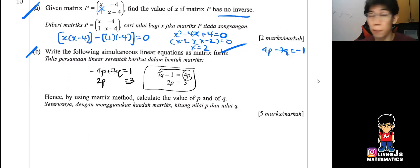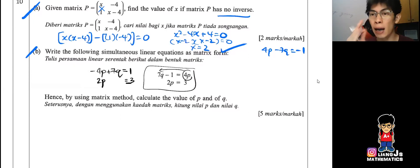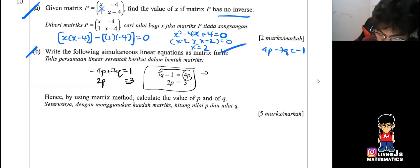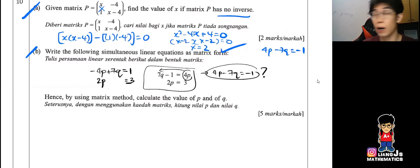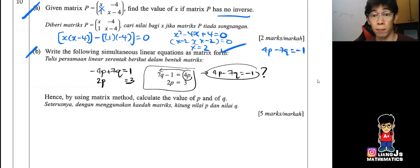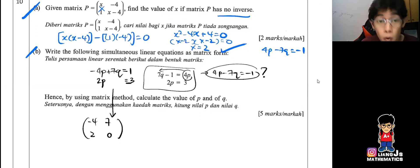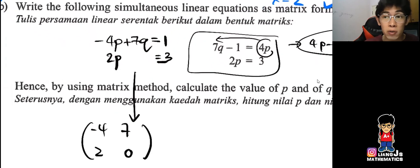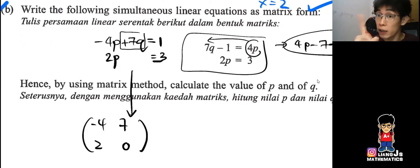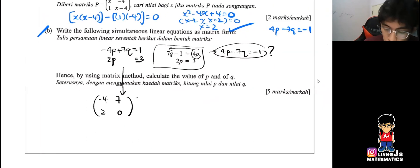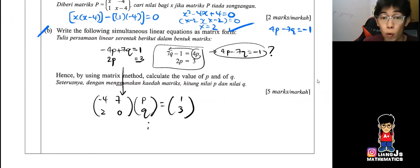Before continuing — checking the first equation: anyone who has 4p minus 7q equals negative 1 is also fine, no problem. Now the matrix bracket is [negative 4, 7; 2, 0], and p and q give the column vector [1; 3]. If your equation had negative 7q instead, the matrix entry becomes negative 7 — be careful. Ours is positive 7, so proceed with p and q equals [1; 3].